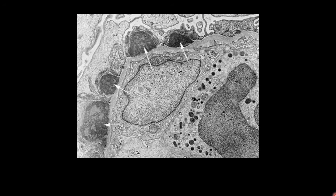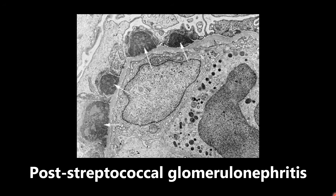This next image is post-streptococcal glomerulonephritis seen under electron microscopy. The prominent structure pointed out by the white arrows is the sub-epithelial humps, commonly associated with post-streptococcal glomerulonephritis. Very high yield to know that term — sub-epithelial humps — as well as what they look like under EM, because questions about the different glomerulopathies are common on USMLE and COMLEX.